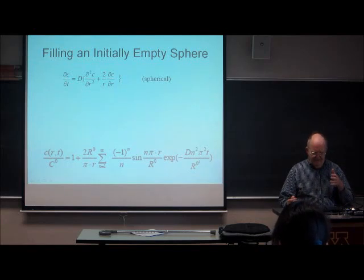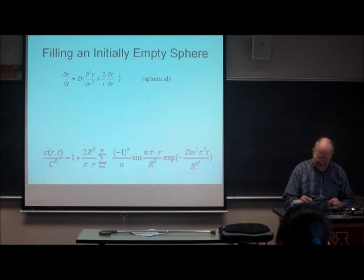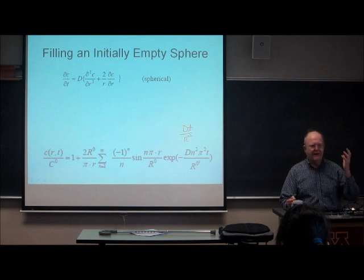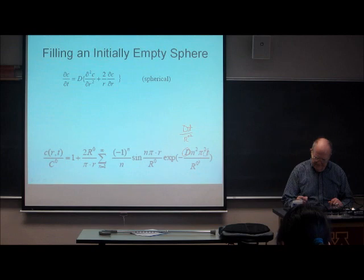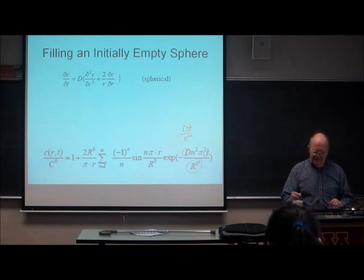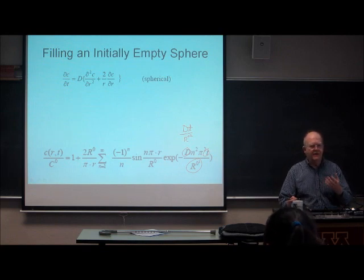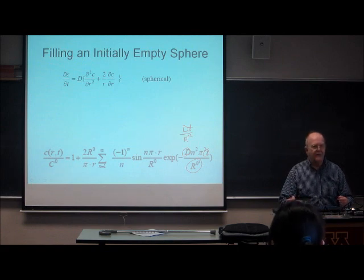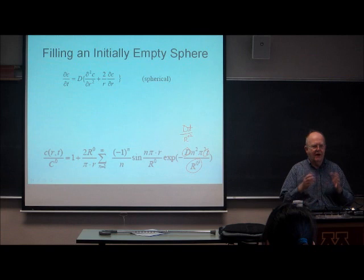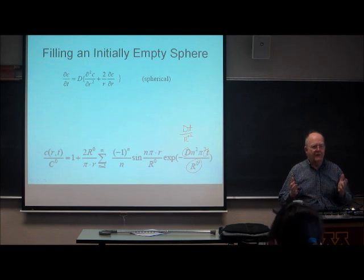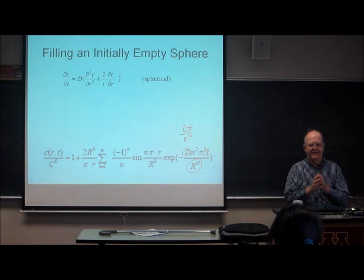I put the results of this equation as a function of dp over r naught squared. Where did that come from? It comes from that equation. Everything else in the exponential is a number — n is 1, 2, 3, pi is pi. So the only real intrinsic variable is dt and r naught squared. If you want to plot versus time relative to the size, it's dt over r naught squared, because it's the only combination that has no units.